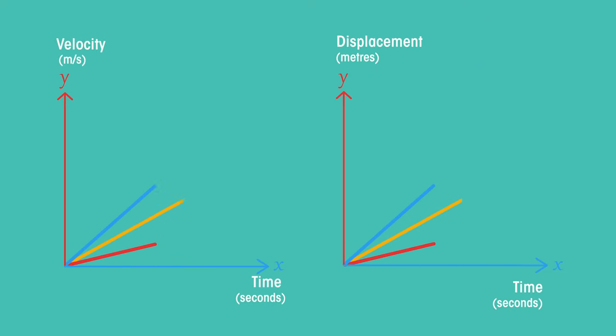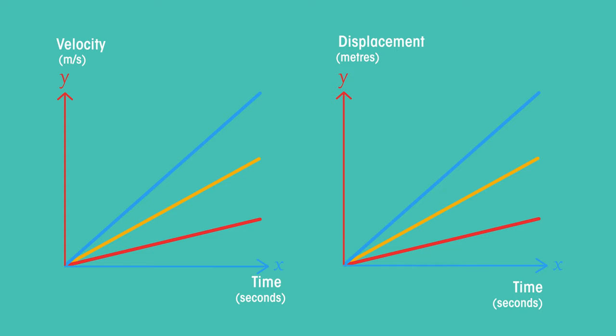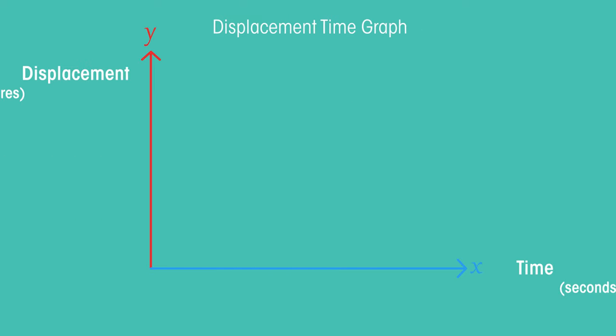Sometimes we need to plot an object's journey over time. To do this we use displacement time graphs and velocity time graphs. Let's have a look at the displacement time graph.